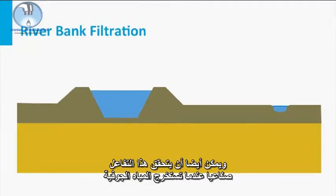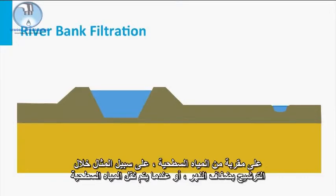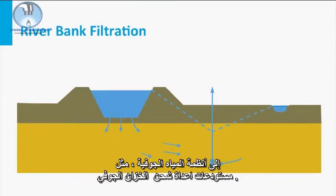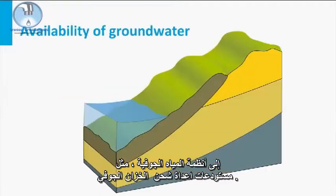This interaction can also be accomplished artificially when groundwater is abstracted close to surface water — for example, during riverbank filtration, or when surface water is transported to groundwater systems, like during managed aquifer recharge.